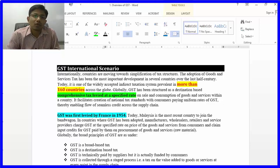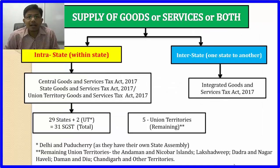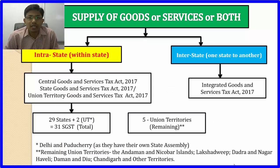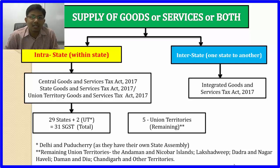If the supply is within the same state, then it will be CGST and SGST. If the transaction is within a union territory, then it will be CGST and UTGST.